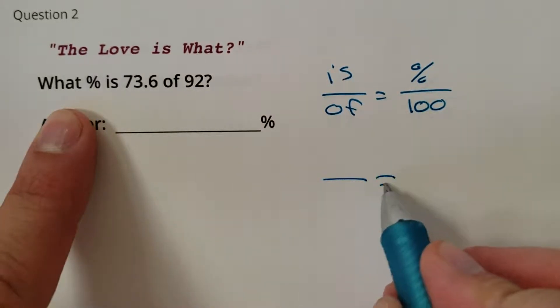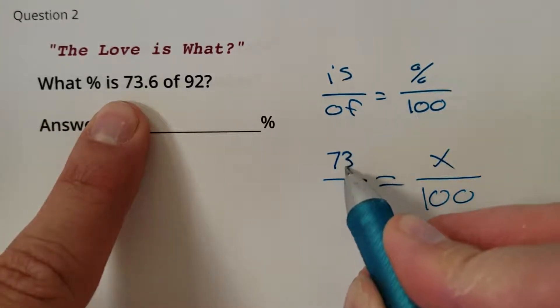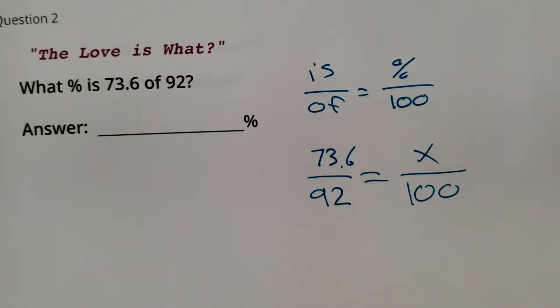So we're trying to find what percent over 100 is 73.6 of 92. Look at that, cross multiply and divide.